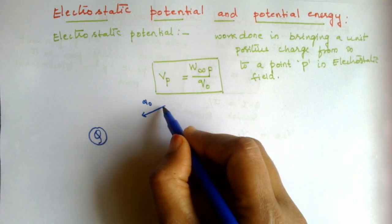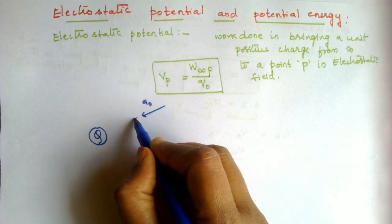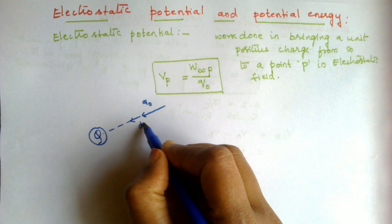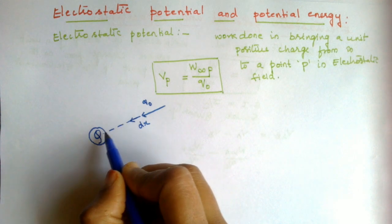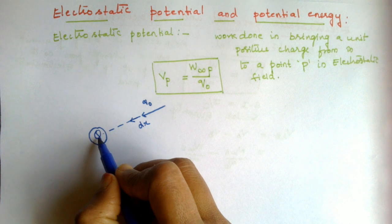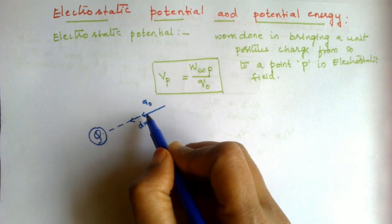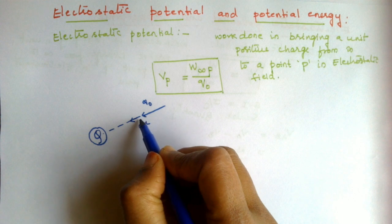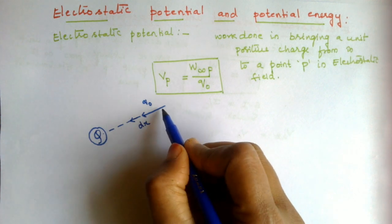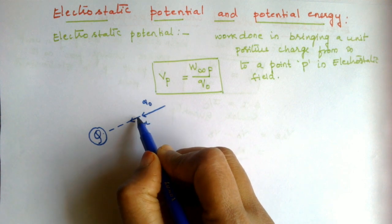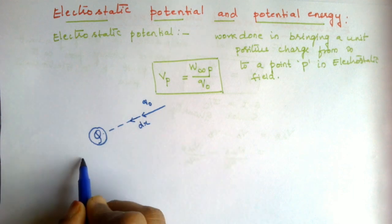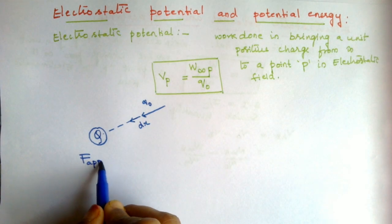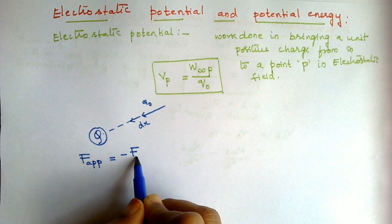Against the force of repulsion you are bringing the charge towards the positive charge. A small displacement dr is produced, and since you are bringing it close to a positive charge you will experience a force of repulsion due to capital Q. Against this force you will have to do some amount of work, and while bringing the charge you must bring it without any acceleration, so your applied force should be at least equal to the electrostatic force.